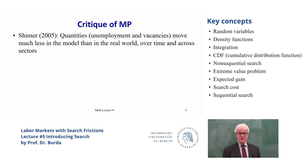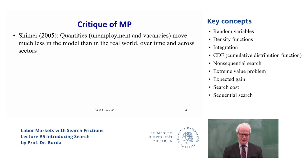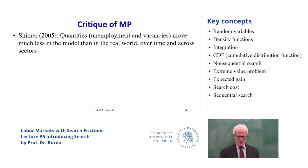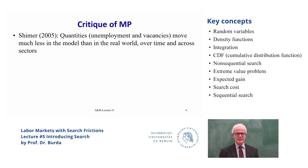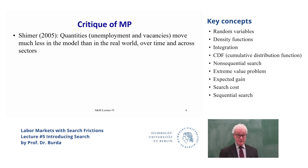There were a lot of critiques of this model that we alluded to in earlier lectures. One is the famous Hall-Shimer critique. Shimer simulated a simple version of the MP model and found that the quantities that are relevant — meaning unemployment and vacancies — are just a lot more volatile in the data than they are in the model. This is true across time as well as across sectors. The MP model seems to be missing the target, predicting much more fluctuation of the wage and much less fluctuation of unemployment and vacancies.